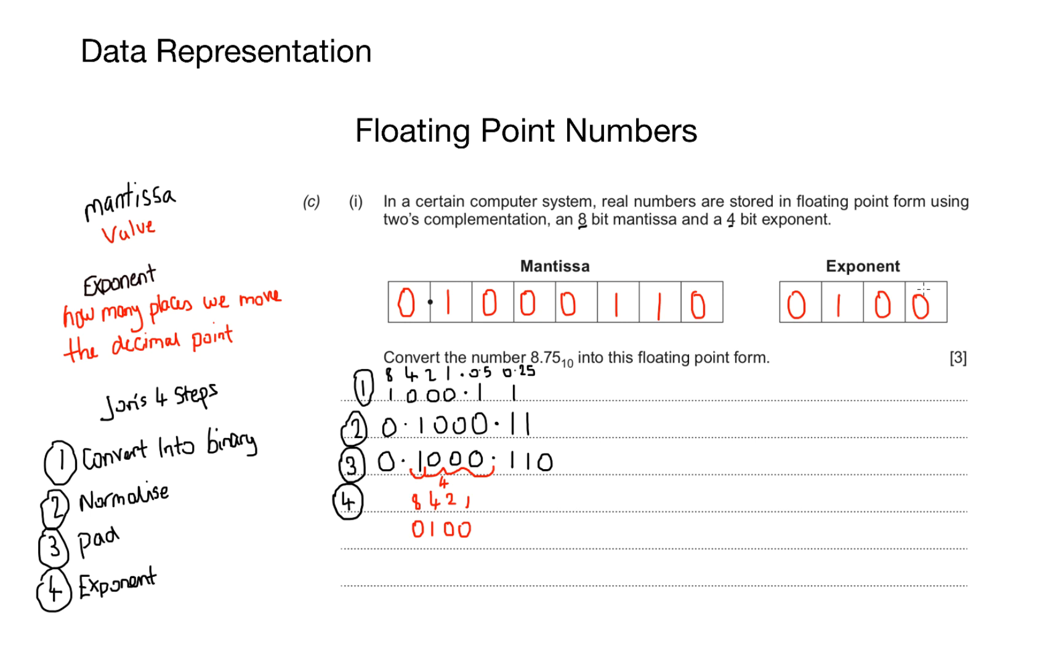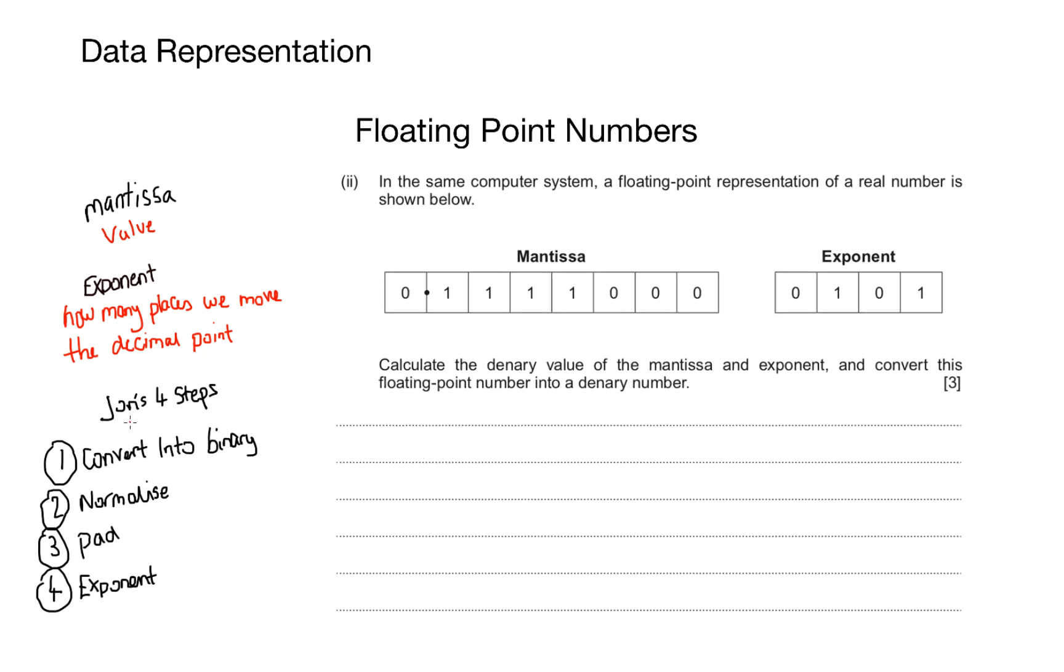So how do we check our answers? Well, in the next question you will see how to reverse engineer this process. The other type of question you could get is if the mantissa and exponent are already filled in. Now this question is a bit tricky because students always fall down the same trap. In the same computer system, a floating point representation of a real number is shown below. Calculate the denary value of the mantissa and exponent, and convert this floating point number into a denary number.